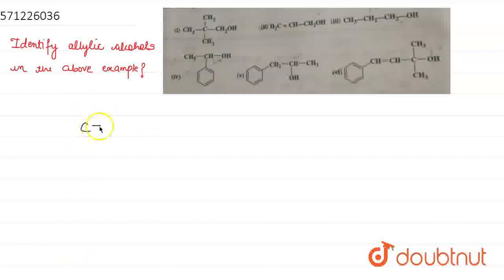Allylic alcohols are those alcohols in which the alcohol group is attached to the carbon which is adjacent to the double bonded carbon.